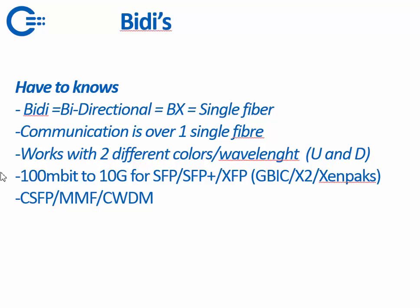They are available from 100 Mbit to 10 Gig in the SFP, SFP Plus, and XFP form factors, also in GBIC, X2, and XENPAK. The X2 and XENPAK are available in converter form. There is also some extra information in the last sheet about the CSFP, multimode fiber, and CWM.